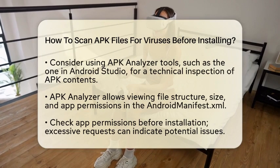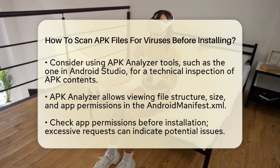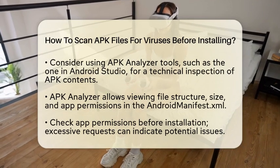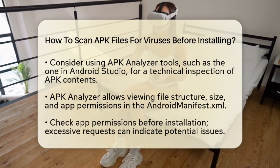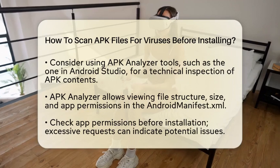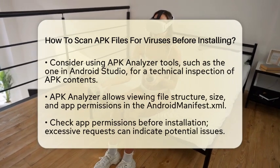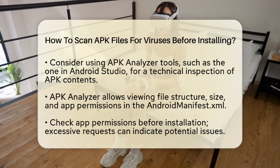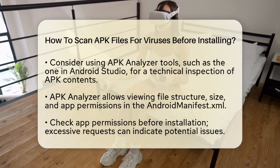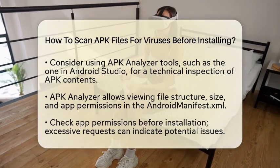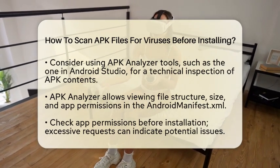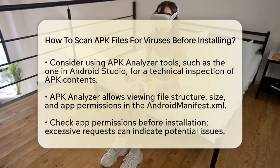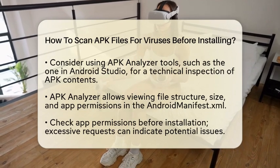If you want a more technical approach, consider using APK Analyzer tools. Android Studio has an APK Analyzer that lets you inspect the contents of an APK file. With this tool, you can view the structure and size of files inside the APK, analyze the compiled code, resources, and the Android Manifest XML file, which declares app permissions and components. Although the APK Analyzer does not detect viruses directly, it helps identify suspicious modifications or unusual file sizes that might indicate tampering.